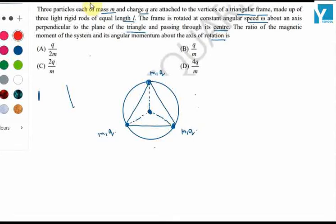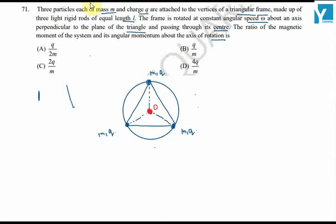Now this triangular frame rotates about an axis passing from this point O perpendicular to the plane. They will rotate in a circular path which we have shown here.